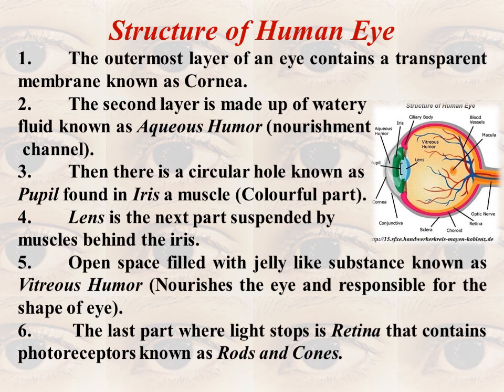The next part is the pupil — a circular hole. And surrounding it is a muscle known as the iris. The iris is the important muscle that gives color to your eye. Whether your eyes are black, brown, or some other color, the iris is responsible for that color. If someone has blue eyes, that is also due to the iris.